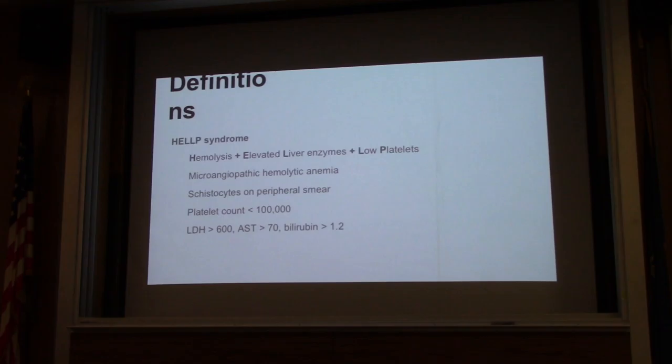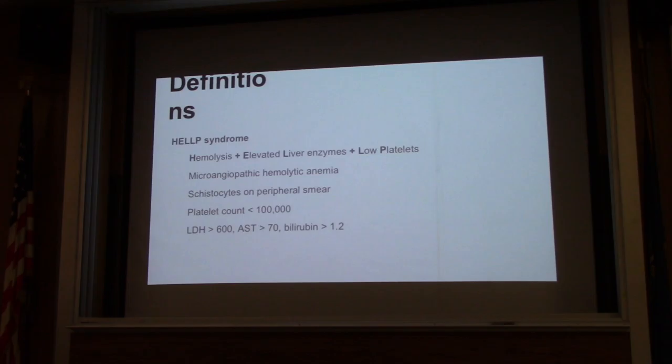HELLP syndrome is an atypical systemic form of preeclampsia, characterized by hepatic dysfunction. It stands for hemolysis, elevated liver enzymes, and low platelets. You get a microangiopathic hemolytic anemia, so you will see schistocytes. It is typically associated with low platelet counts and elevated liver enzymes like LDH, AST, and bilirubin.